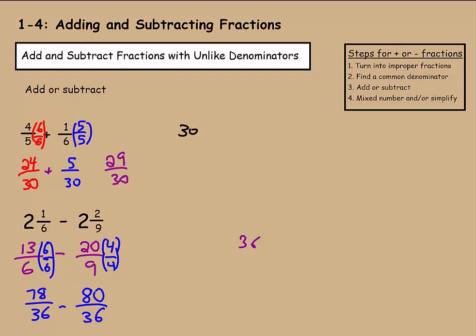So 78 over 36 minus 80 over 36. Here we see that this is going to be below 0, because we're taking away more than what we have. And 80 is bigger than 78 by 2, so that'll be negative 2 over 36. We can't turn this into a mixed number because it's not bigger than 1, but we can simplify it. These are both divisible by 2, so that means our answer would be negative 1 over 36 divided by 2, which is 18.